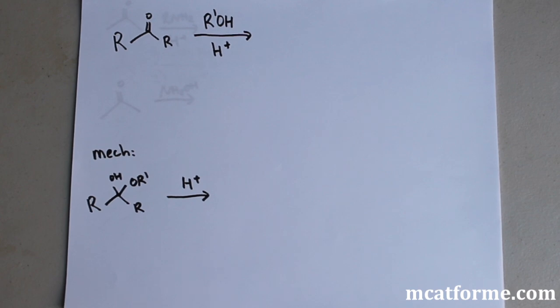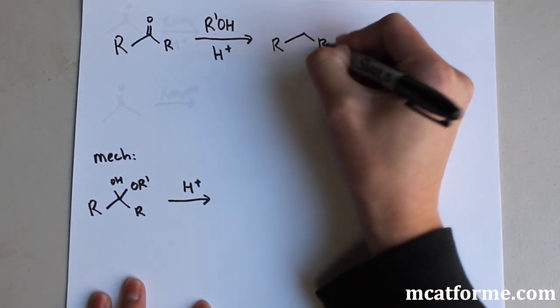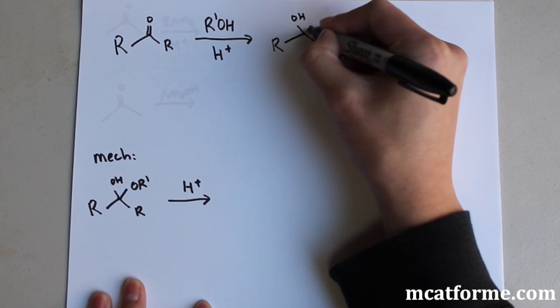So this one is just reacting an alcohol with a ketone, and this doesn't have to be a ketone, it can also be an aldehyde. So we'll see what happens right here. The first thing that we're going to produce is something called a hemiacetal.